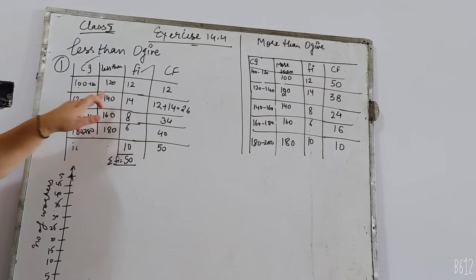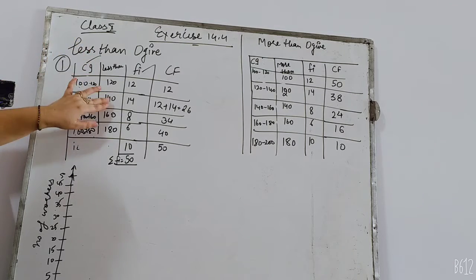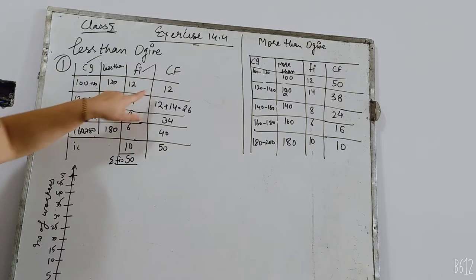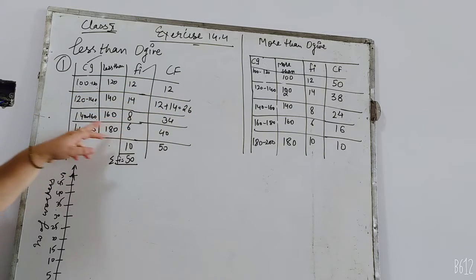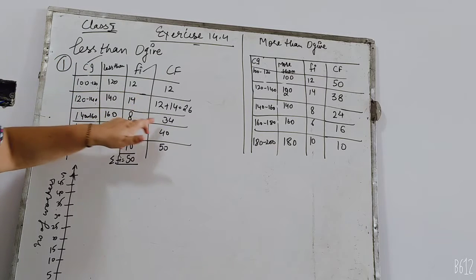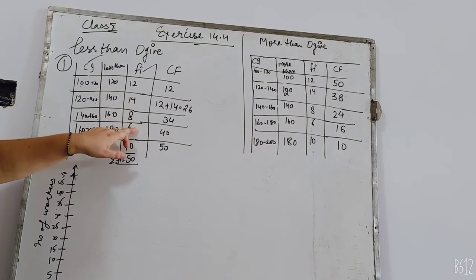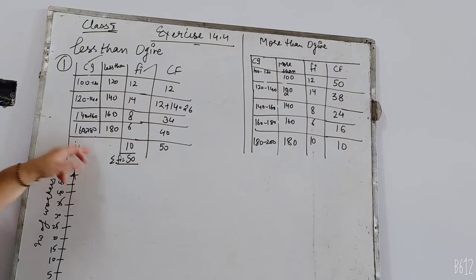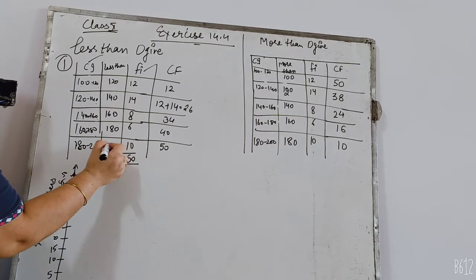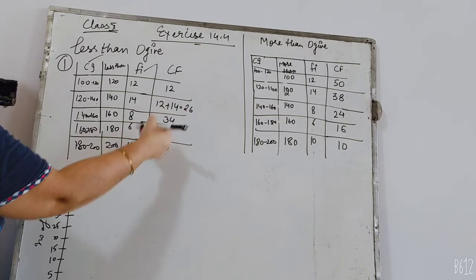How much is 140? 100 to 120. Because 140 is the limit, what does this count mean? 12 plus 14 is 26. Similarly, in the case of 160, we have all three intervals. It means 12, 14 and 8, we add 3 to get 34. And then in 180, we add 4. And this is 40. And then, 180 to 200. What does this count mean? 200 to less. All the numbers have 50. Like you have to make CF.